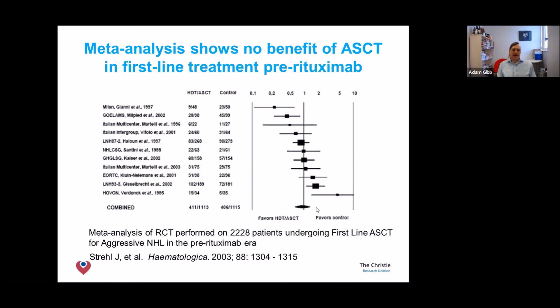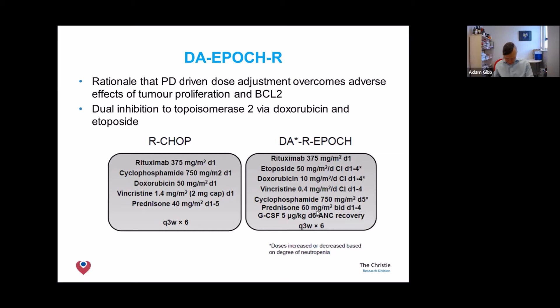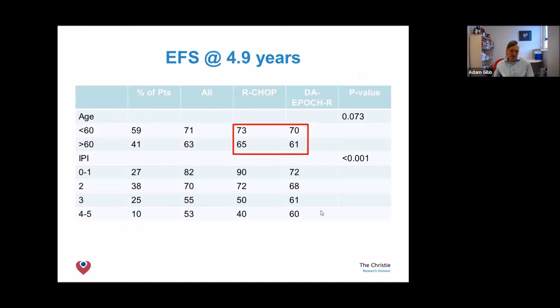The Americans took all the drugs in CHOP, added etoposide, and delivered them by very slow 96-hour continuous infusion, renaming it DA-EPOCH-R. Early trials were impressive with up to 100 percent of people responding. But a large randomized trial with five-year follow-up showed no difference in survival — around 70 percent of younger patients and 60–65 percent of older patients were still alive at five years with no difference between the two groups.